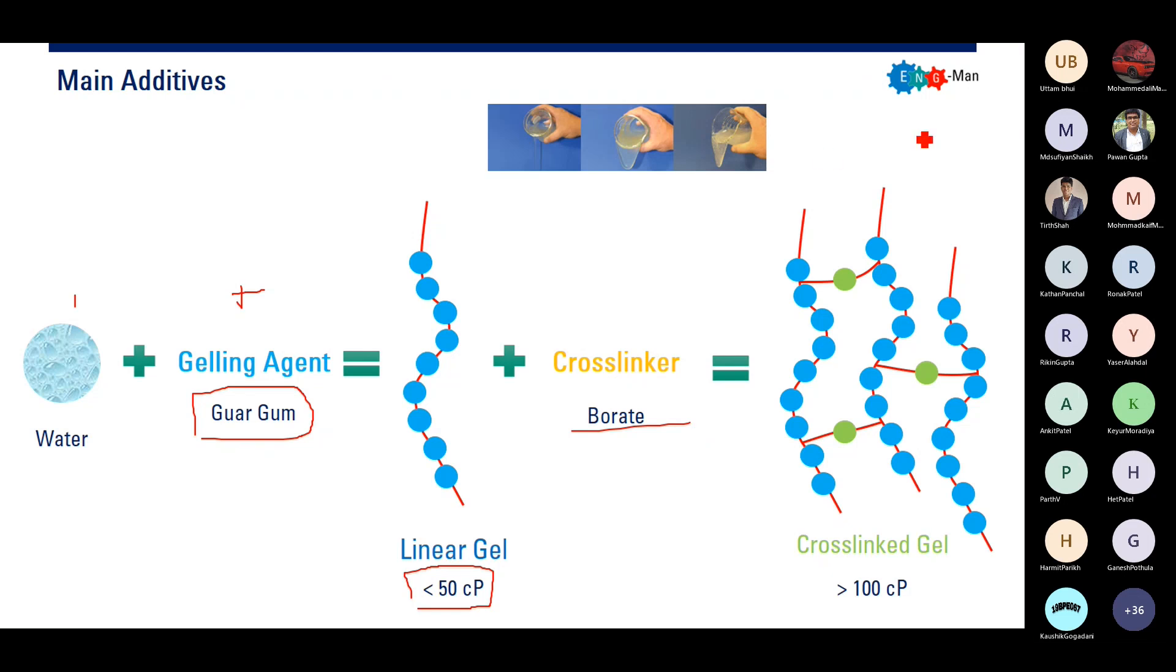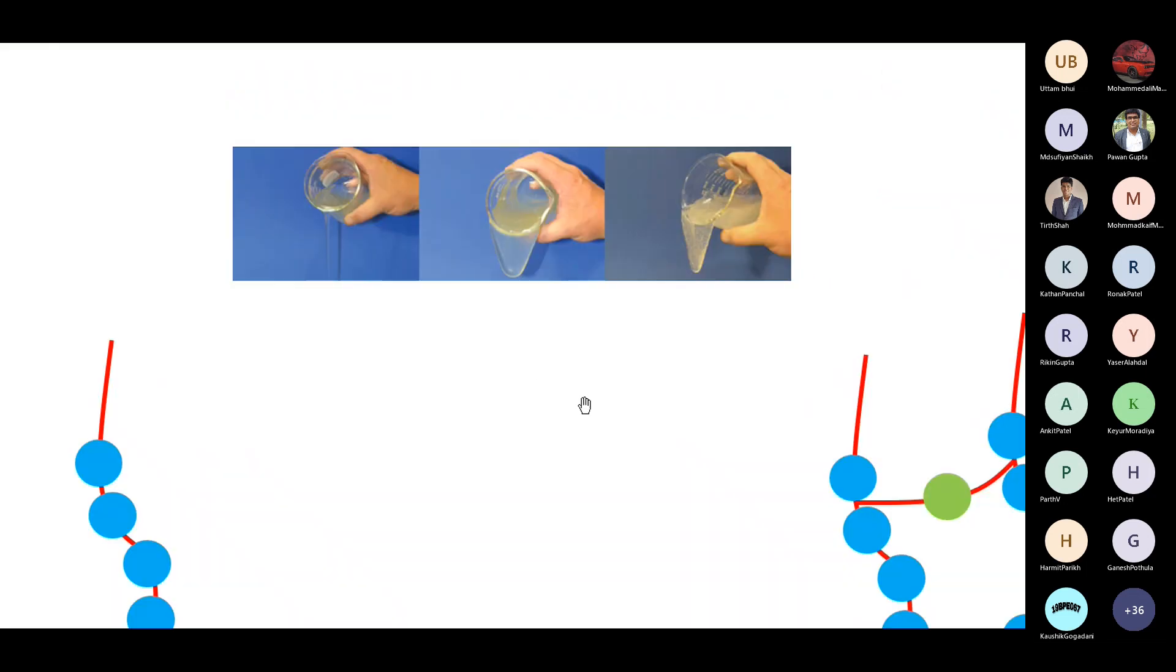It has viscosity more than 100 centipoise. The effect visually can be seen with this picture. So you have linear gel here with low viscosity, and then you add cross-linker, you will have this gel system that will be used for main fracturing operation.